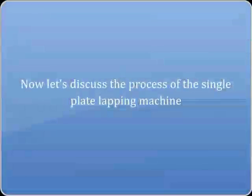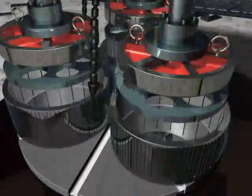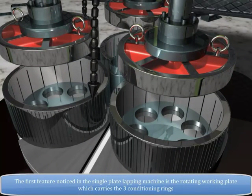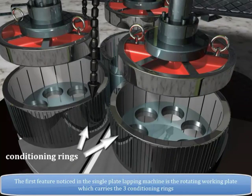Now let's discuss the process of the single plate lapping machine. The first feature noticed in the single plate lapping machine is the rotating working plate which carries the three conditioning rings.